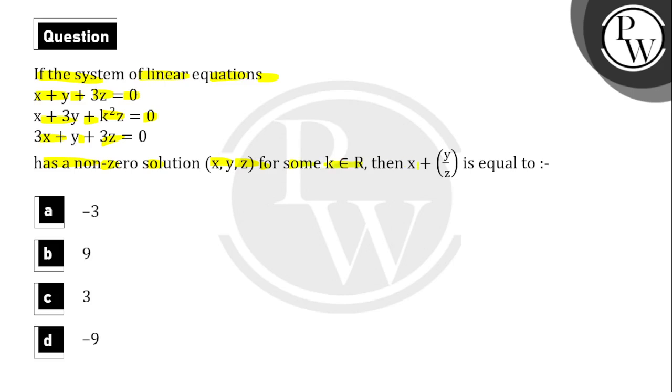For x, y, z where k belongs to R, then x plus y upon z is equal to option a, b, c, or d. We have 4 options for this. We have to tell the value of x plus y upon z. The system of equations has a non-zero solution.